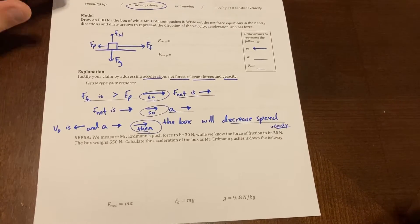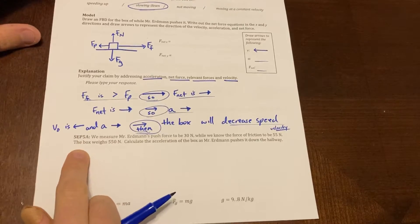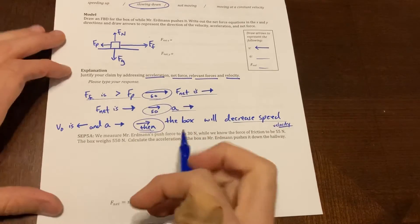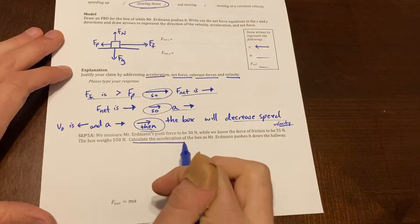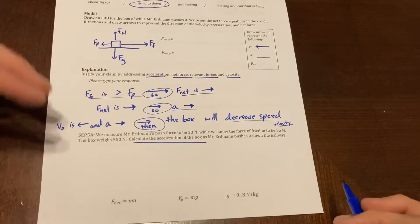Hello everyone. In this video I'm going to be going over number one SCP-5a, word problems. This is the Mr. Erdmann problem and it's asking us to calculate the acceleration of the box when he pushes it down the hallway. So I know at the end of the day that I am looking for my acceleration.